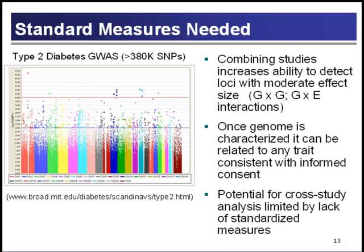In addition to facilitating replication, standard measures are useful because we can more easily combine data from multiple studies — avoiding the painful process of harmonizing data from studies that used different methods for collecting phenotypic or exposure data. When studying the genetics of common complex diseases, we expect effect sizes of SNP-trait associations to be relatively small — odds ratios of 1.3 to 2.0. To detect these small effects and gene-gene and gene-environment interactions, we need very large sample sizes. Combining studies with similar phenotypes is the most efficient way, but this has been limited by the lack of standard measures incorporated into existing studies.